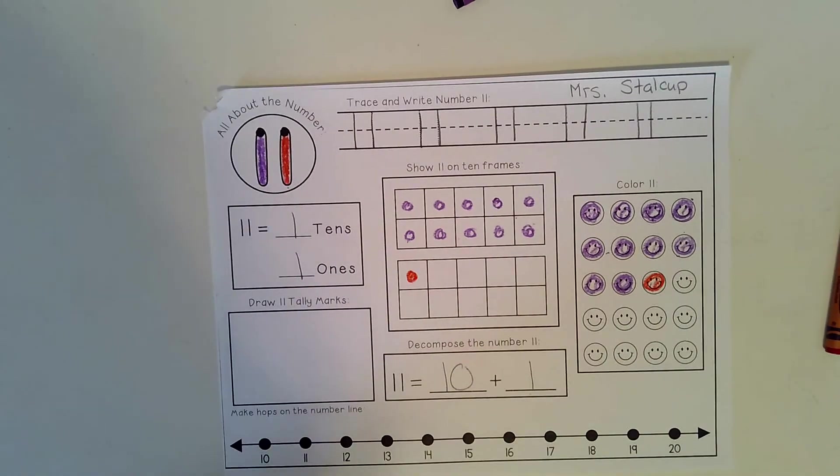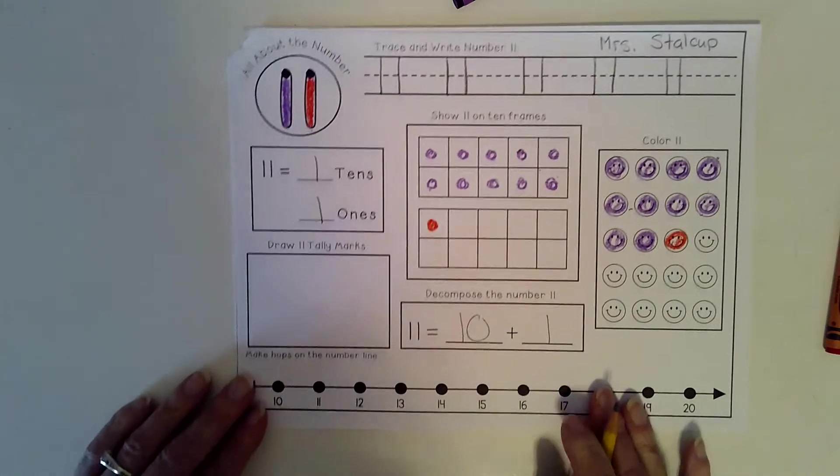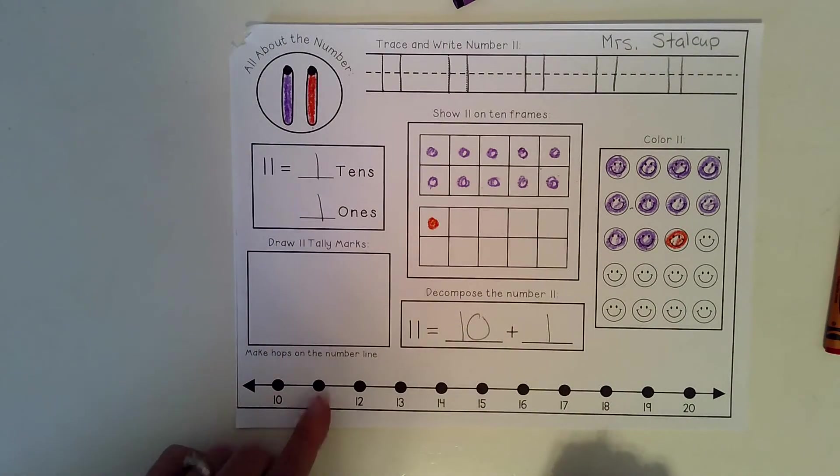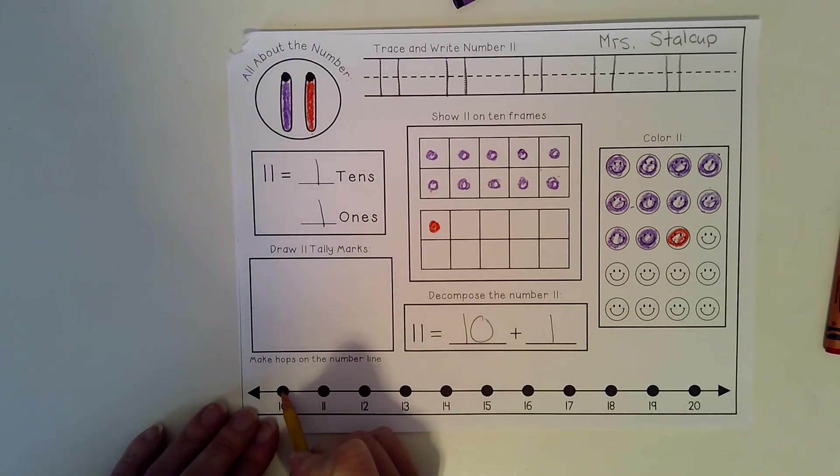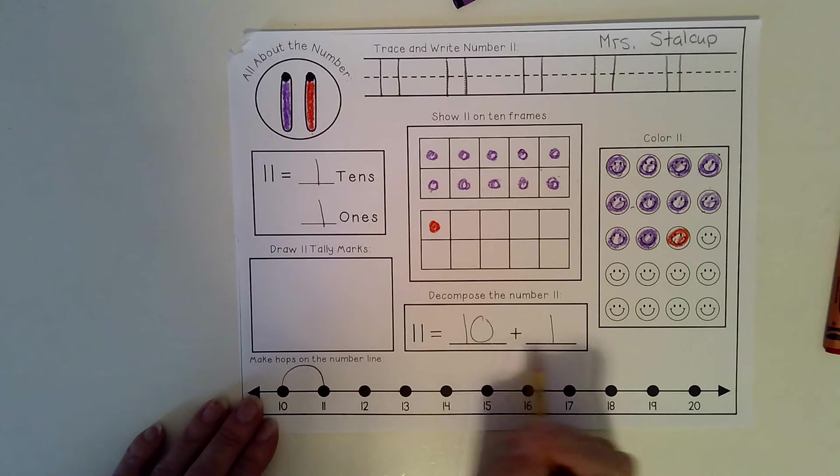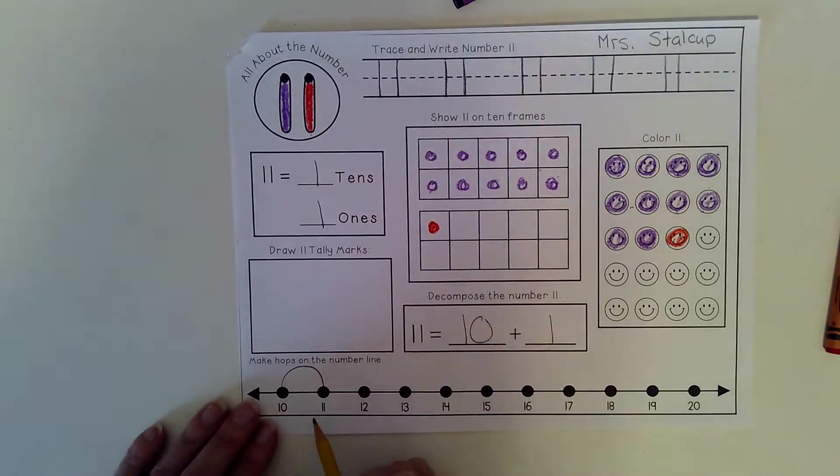Down here, if I was on the number 10 and I wanted to go to the 11, I would do 1 hop. Because 10 plus 1 equals 11.